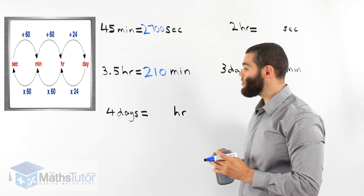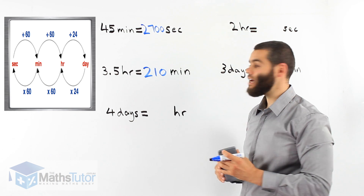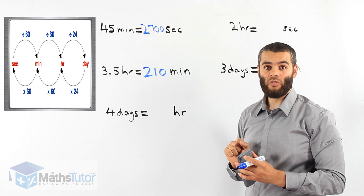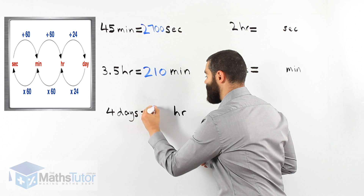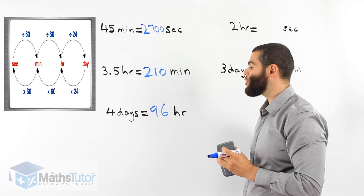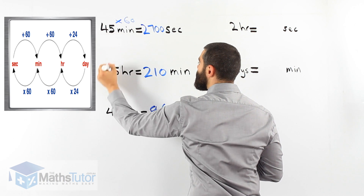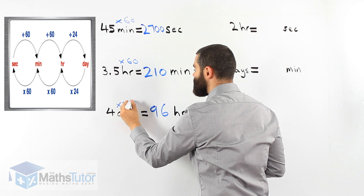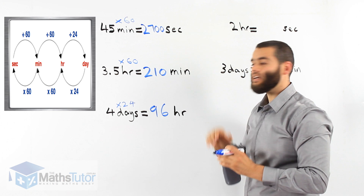In this example, we're asked to convert from days to hours. We have four days and we'd like to know how many hours are in four days. From days to hours, we have to multiply by 24. Therefore, four times 24, and our answer is 96 hours. In four days there are 96 hours. We show our working out and we get our answer very easily.